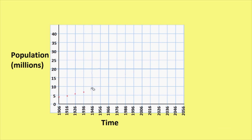Now you can plot your points accurately and use a ruler to join the dots with a line. When I plot the projected data, I will use a dotted or a broken line.